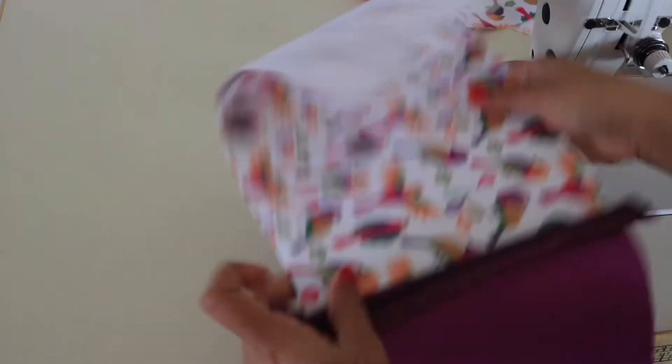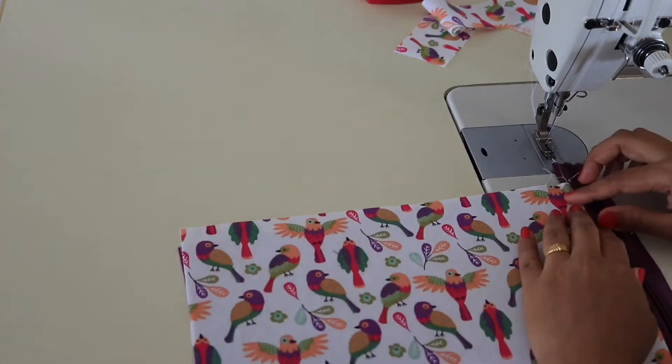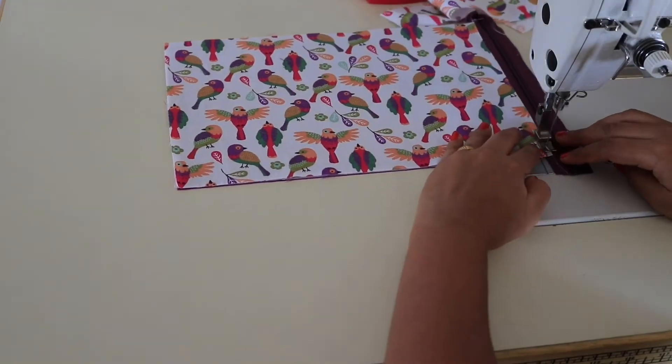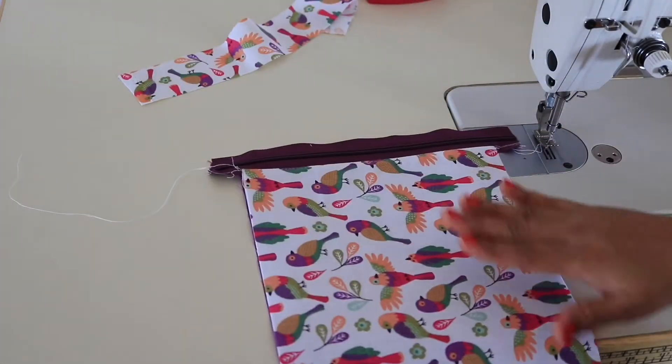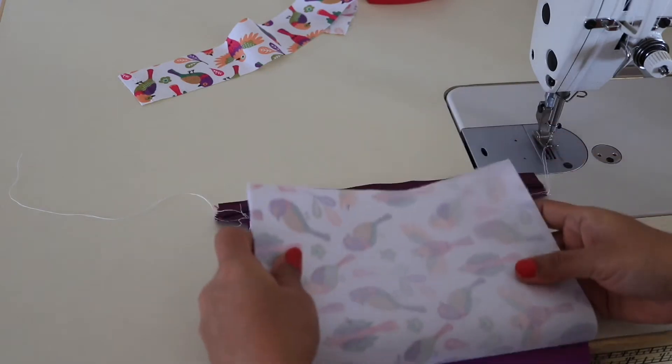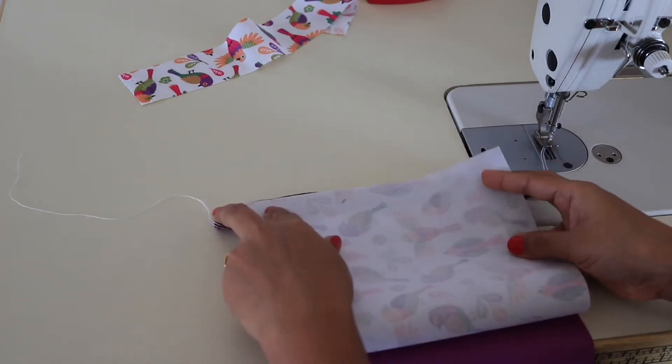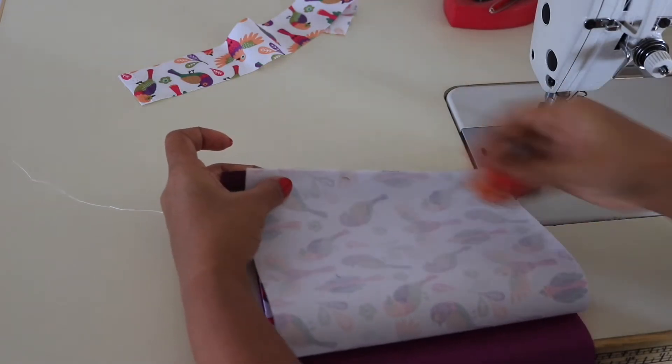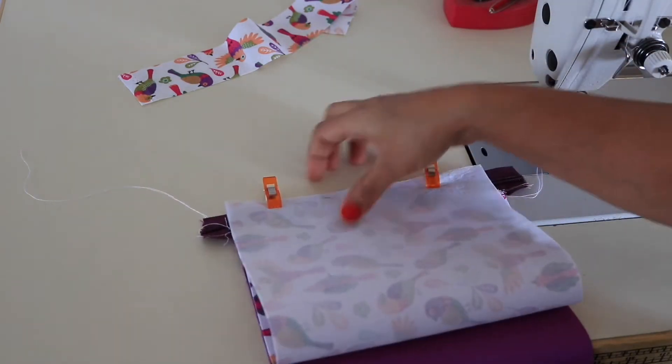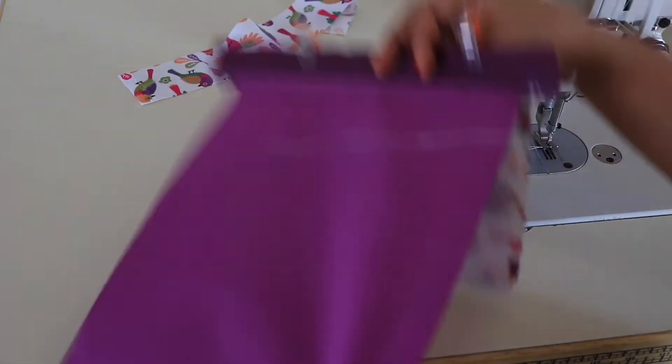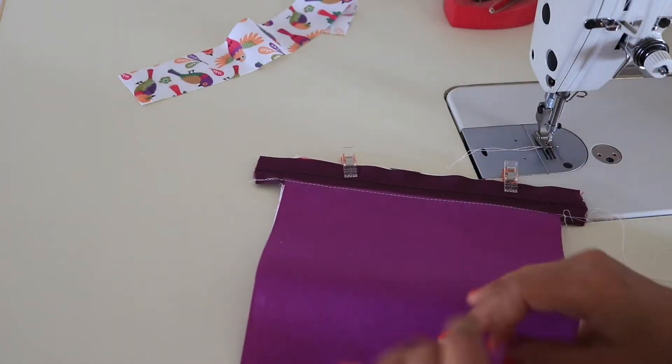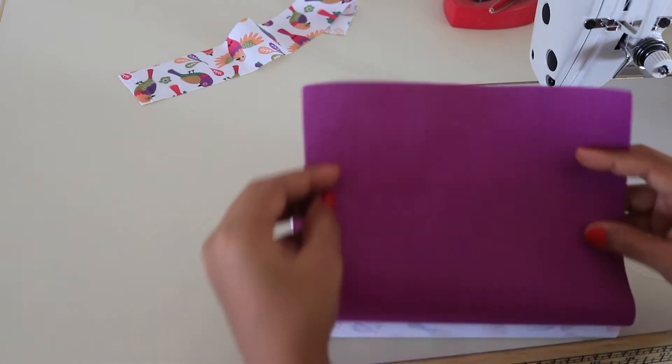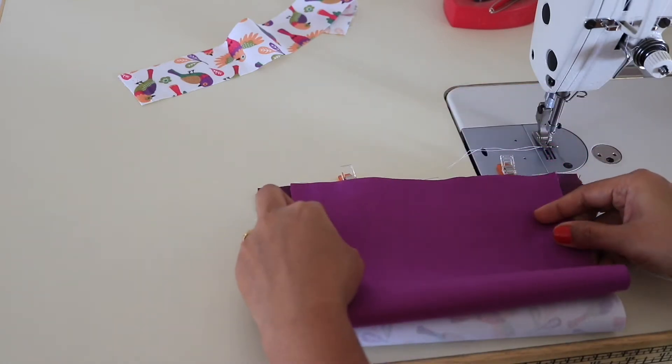Now make a top stitch. Flip the outer panel toward the zipper and clip them. Then flip this over and again flip this lining on the zipper.